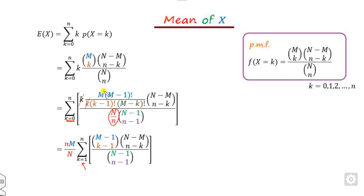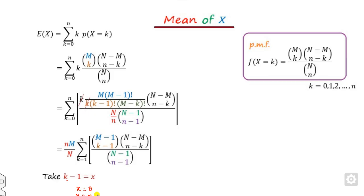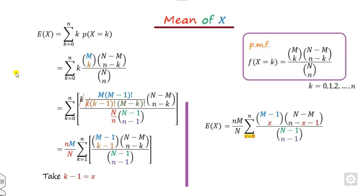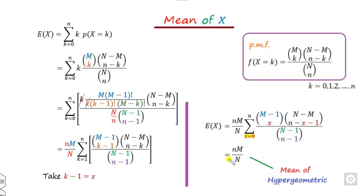This portion is constant with respect to k and can be taken outside. Since k starts from 1 but we need k starting from 0, I take x = k minus 1. So when k equals 1, x equals 0, and when k equals n, x equals n minus 1. Substituting back, and noting that k equals x plus 1, what remains inside the sum is a valid PMF of the hypergeometric distribution, so its sum equals 1. Hence the mean of the hypergeometric distribution is n times M divided by N.